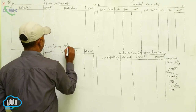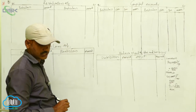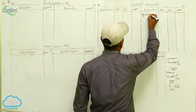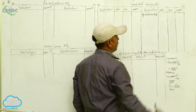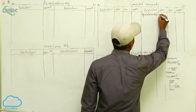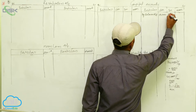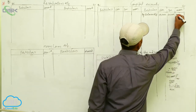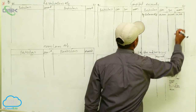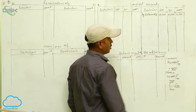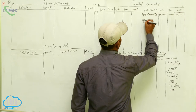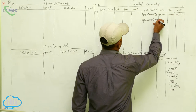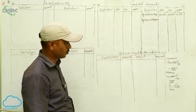In the capital accounts, on the credit side, we write the opening balances brought down: Star ₹50,000, Sun ₹40,000, and Moon ₹30,000. The loan account is Moon's loan account. Next, general reserve of ₹20,000 is distributed.